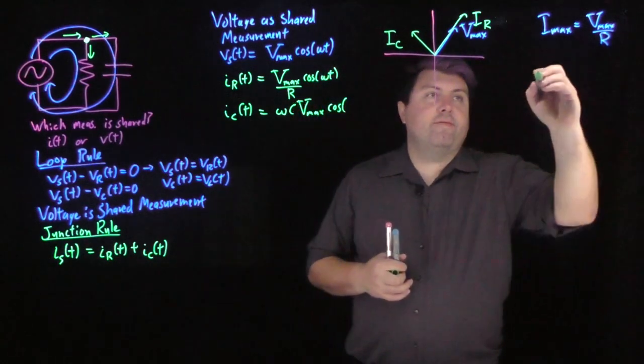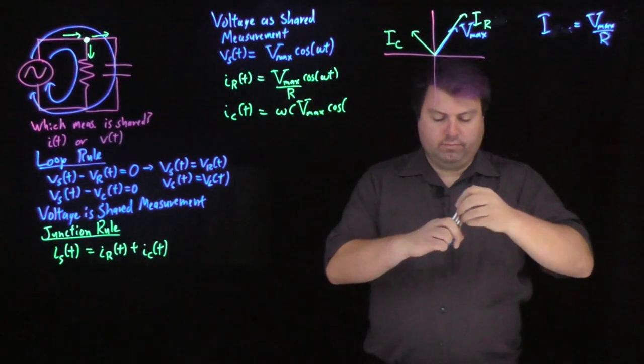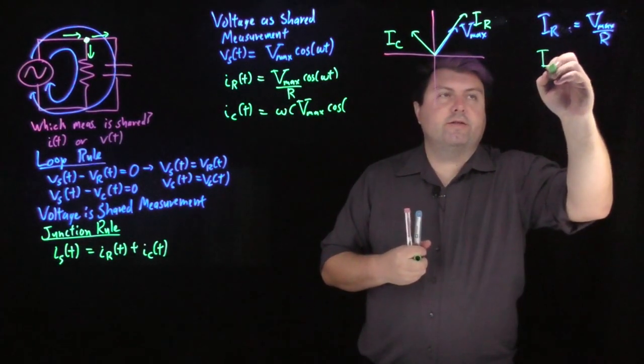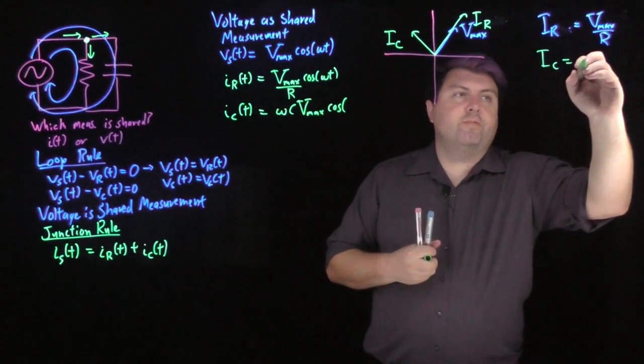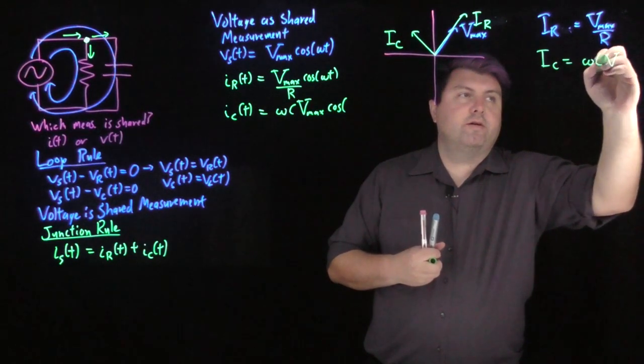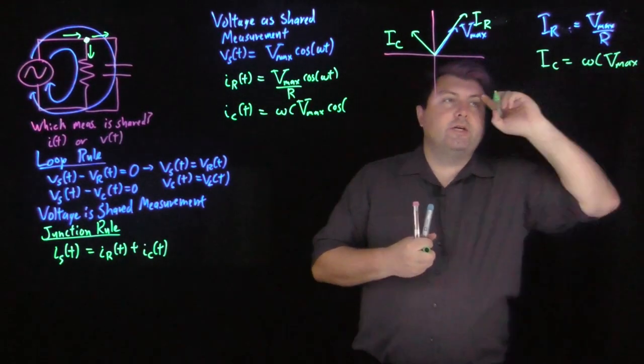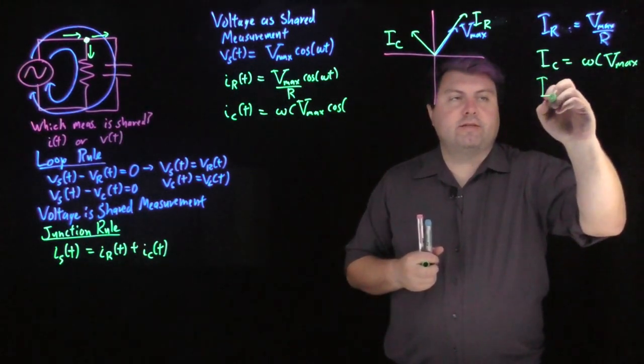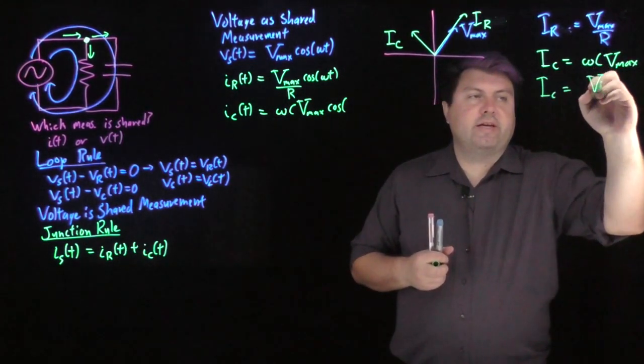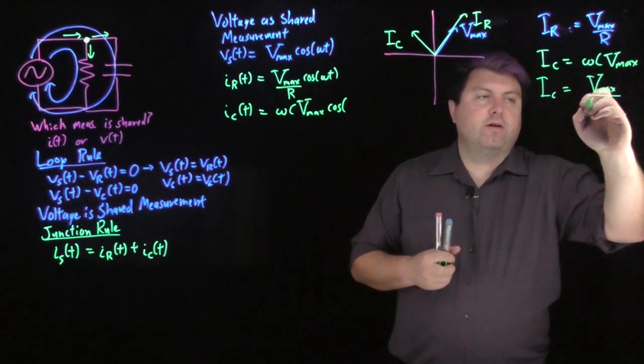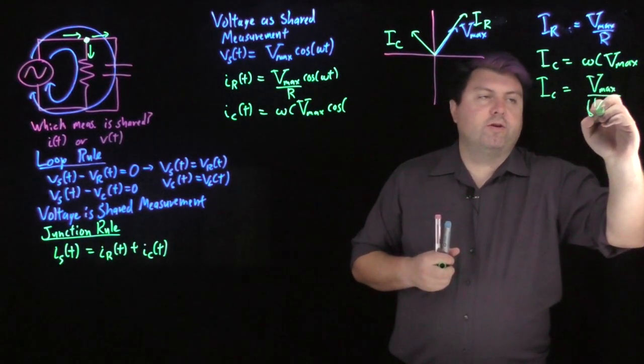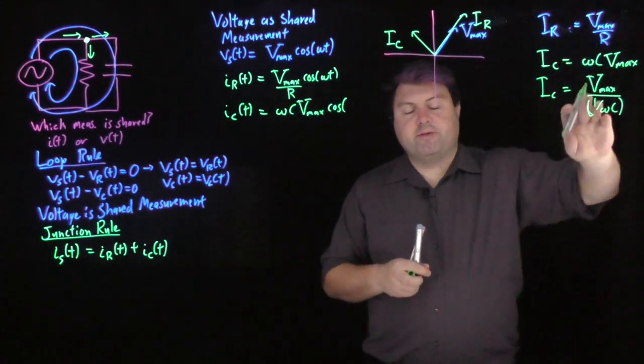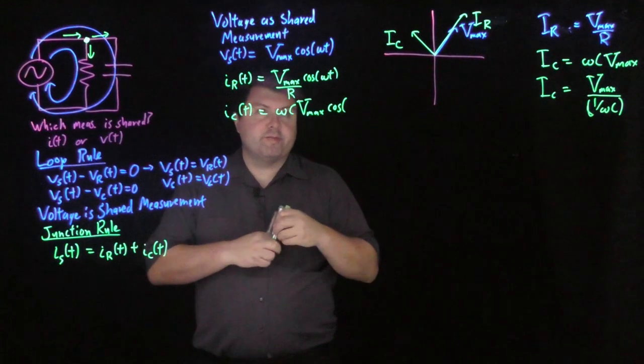And so we have then the current over the resistor, and the current over the capacitor is going to be omega C Vmax. But for this to work with the right reactants, I'm going to rewrite this as capital Vmax over 1 divided by omega C. Just so we have all our resistance type terms in the same place that we expect them.